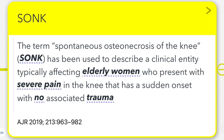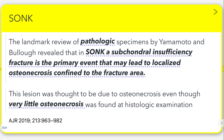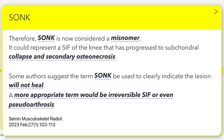Subchondral insufficiency fractures with epiphyseal collapse were previously referred to as spontaneous osteonecrosis of the knee, or SONK. Today, we consider SONK a misnomer, as it more accurately represents a subchondral insufficiency fracture of the knee that has progressed to subchondral collapse and secondary osteonecrosis. Some experts suggest retaining the term SONK for lesions that will not heal, but irreversible subchondral insufficiency fracture or pseudoarthrosis are more appropriate and descriptive terms.